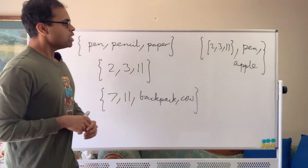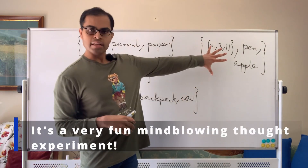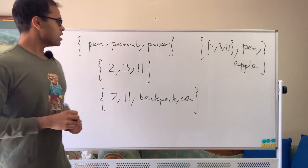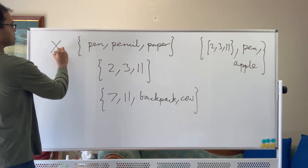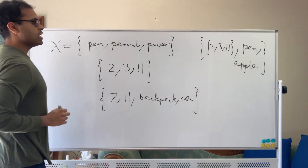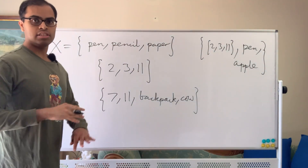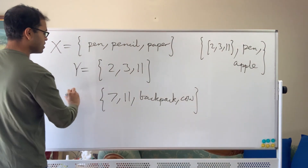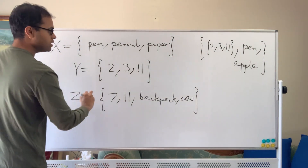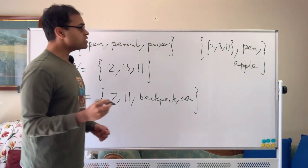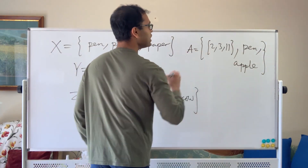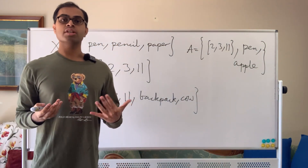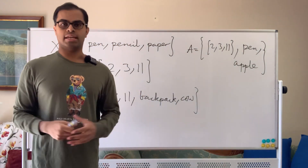Sometimes when we have sets we denote them by letters. For example, we say x denotes the set x. So in this context we can call this set x, this one y, this one z, this one a. So these are all examples of sets.